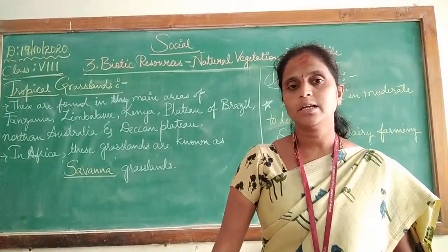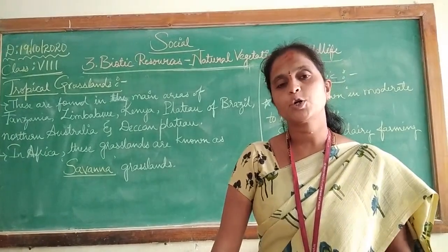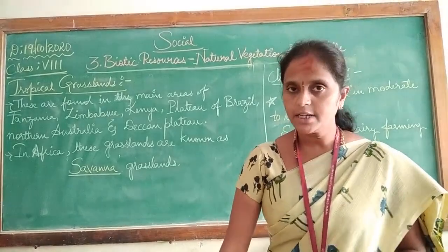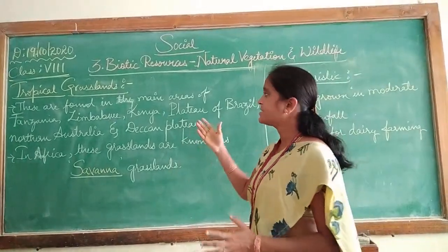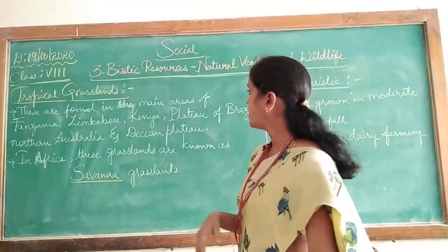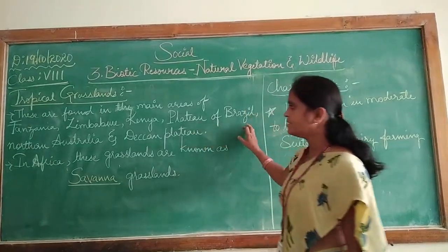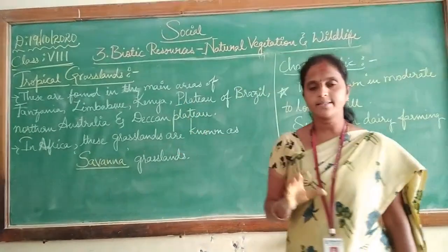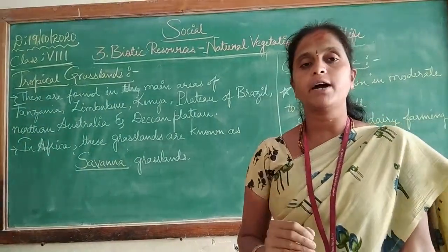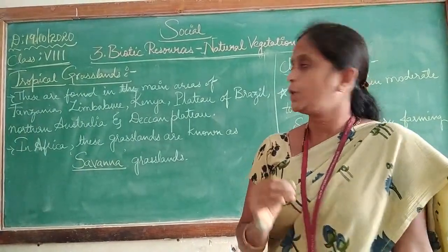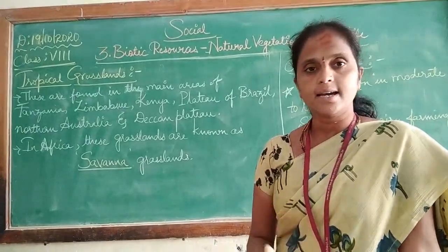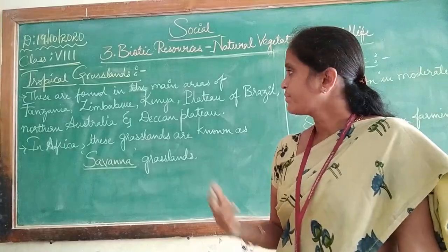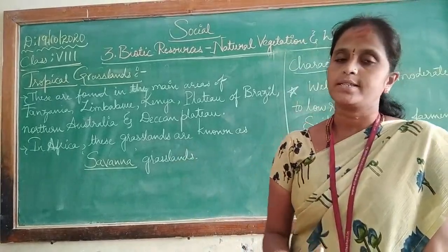Now we will learn about the tropical grasslands. Tropical grasslands are found in the tropical regions of the world. They are mainly found in areas such as Tanzania, Zimbabwe, Kenya, the Plateau of Brazil, Northern Australia and the Deccan Plateau.